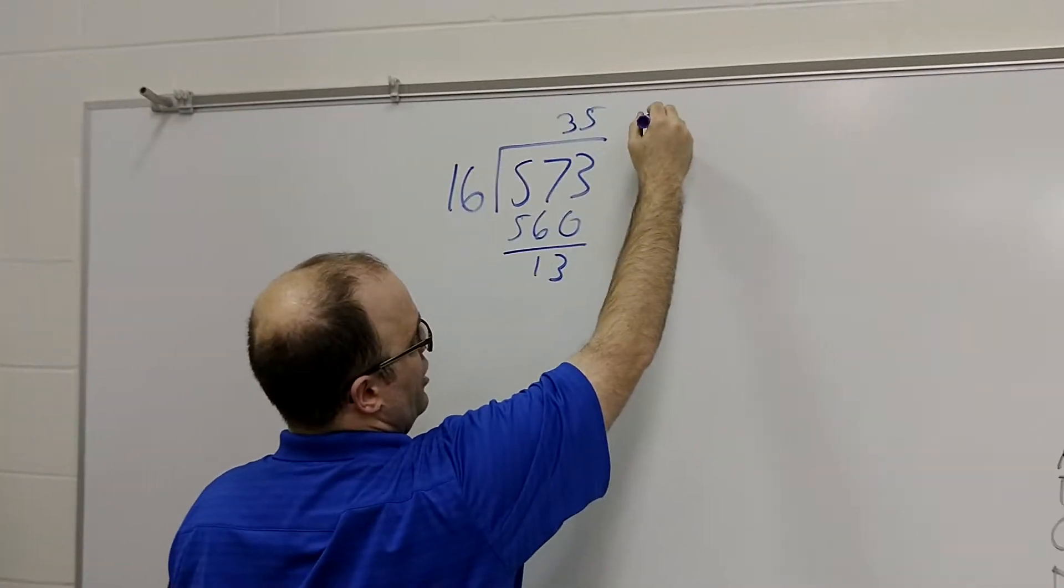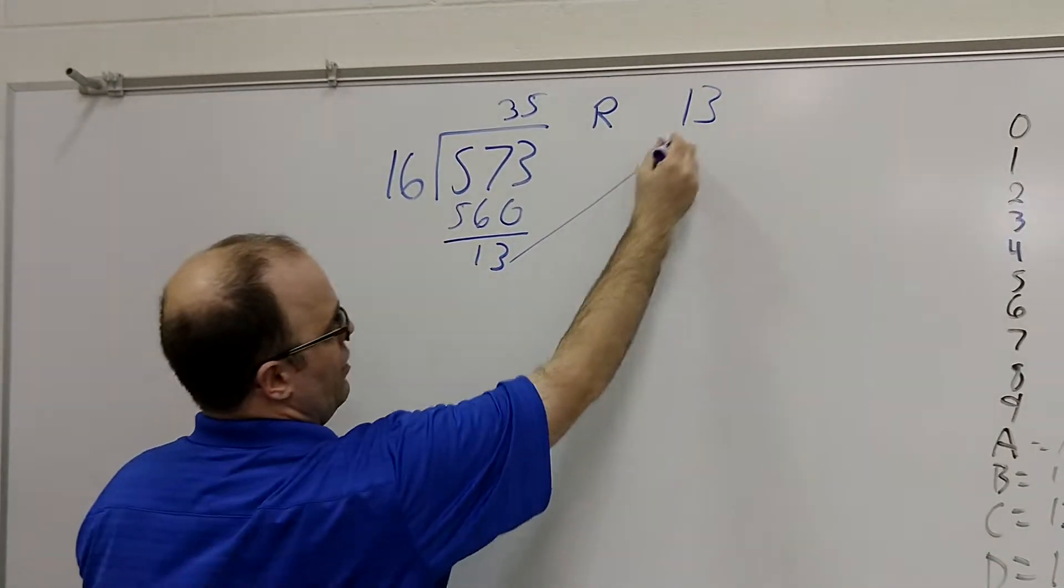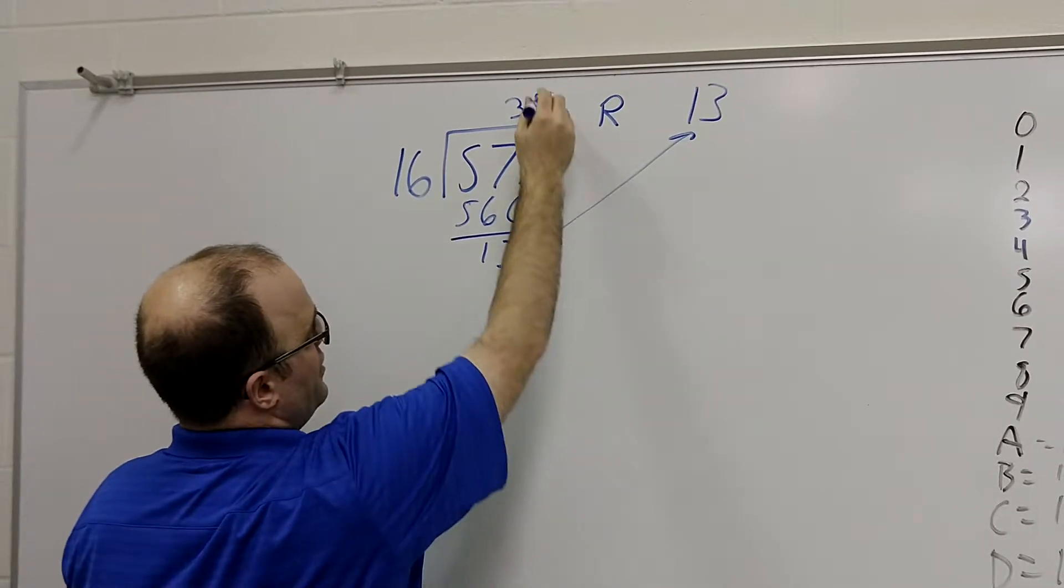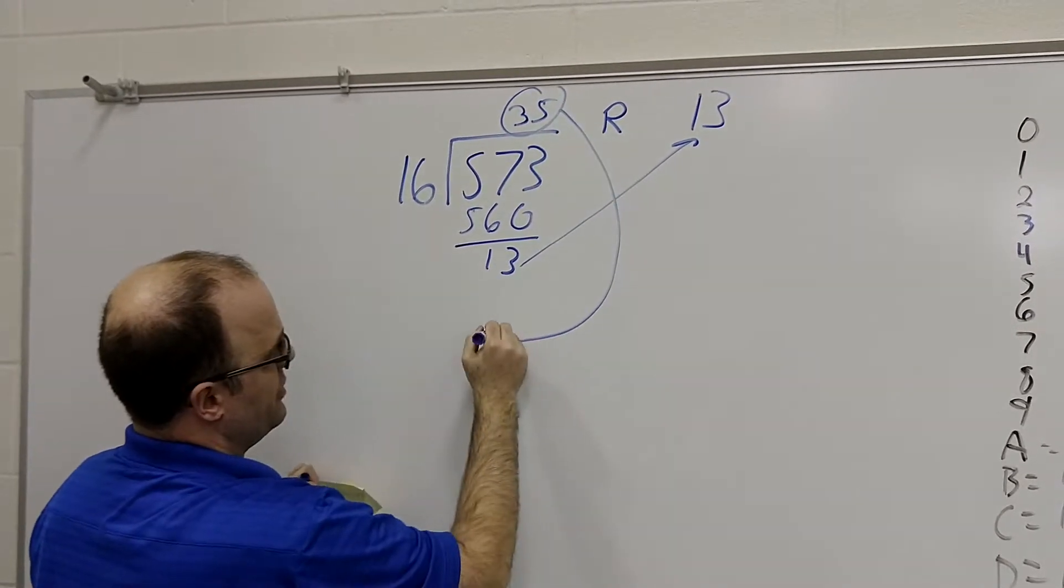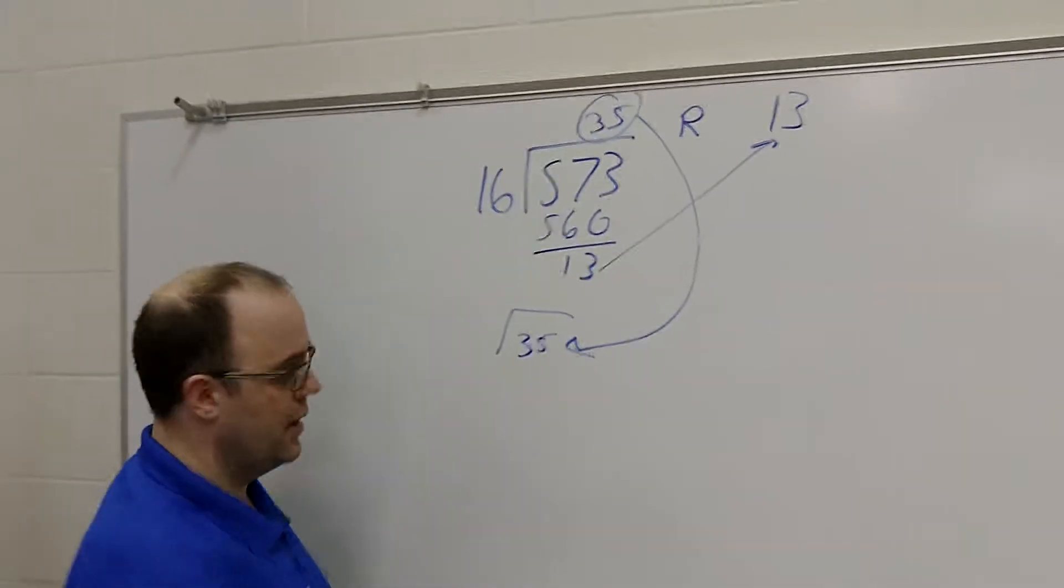So remember in binary, we had the R, and we would put a remainder out here? Do that again. So bring that over here, and then take this number down to here and do long division once again with 16.